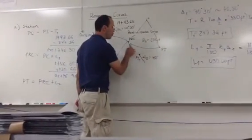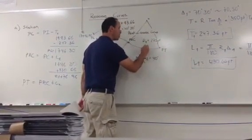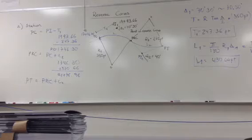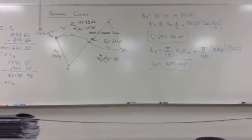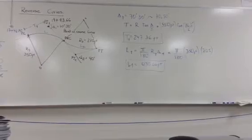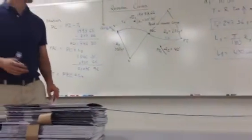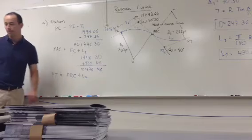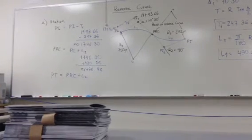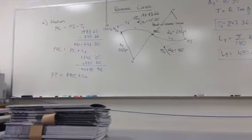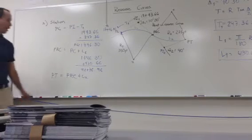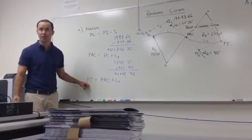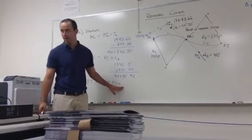We are here, we need to get to this point, we need to add the length of the curve, which is L2, right? Questions so far? That will give you the station on the PT, yes. So it will be kind of like the same thing. Can you see it? PRC plus L2, that's what I put right here. Alright, so PRC plus L2. So now in order for me to find the PT of this reverse curve, then I have to find L2.